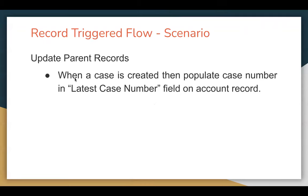In this scenario, we will see how we can update parent records while a child record is created. The use case is: whenever a case is created, populate the case number in the latest case number field on the account record. So whenever any new case is created under an account, we need to populate the latest case number on that account.